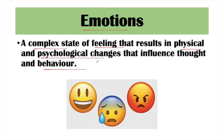For example, happiness is an emotion — we feel happy. Next is fear — we are afraid of any stimulus; that fear develops as an emotion. If someone has insulted us, then our emotion develops as anger or frustration. So all these — happiness, fear, anger, frustration — are emotions. These are feelings, these are states which affect our behavior.